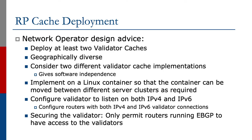Given the internet today is migrating to dual-stack operation, where we're using both IPv4 and IPv6, I would advise configuring the validator to listen on both IPv4 and IPv6, and then configure the routers with both IPv4 and IPv6 validator connections. So in the case of IPv4 breaking, you still have validation information over IPv6, and vice versa.